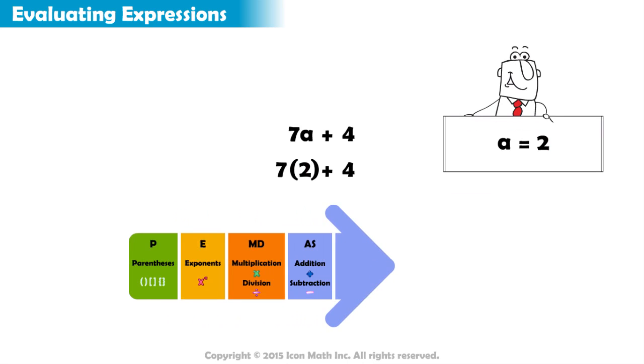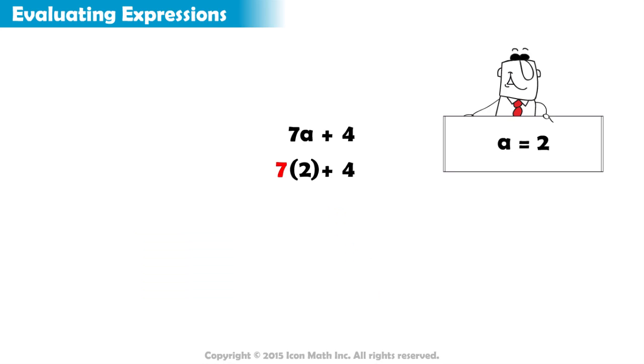Since multiplication occurs before addition, we first multiply 7 and 2. 7 times 2 equals 14.